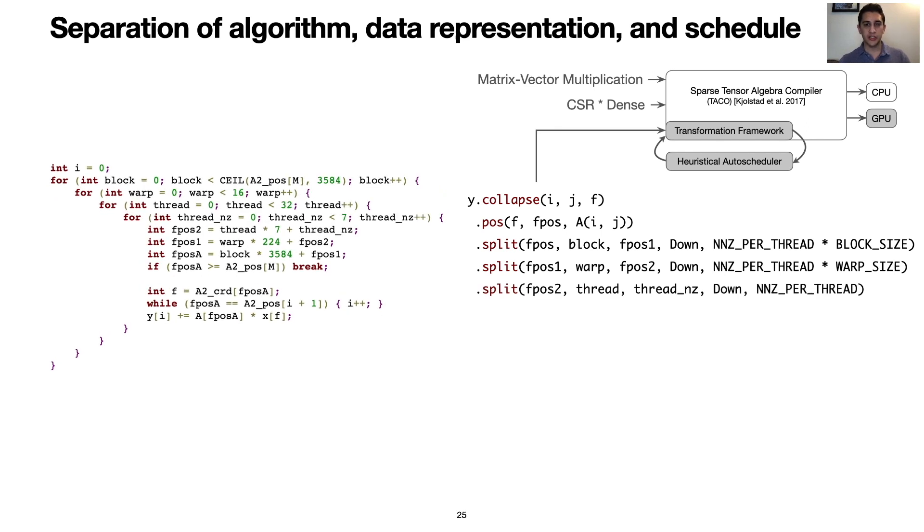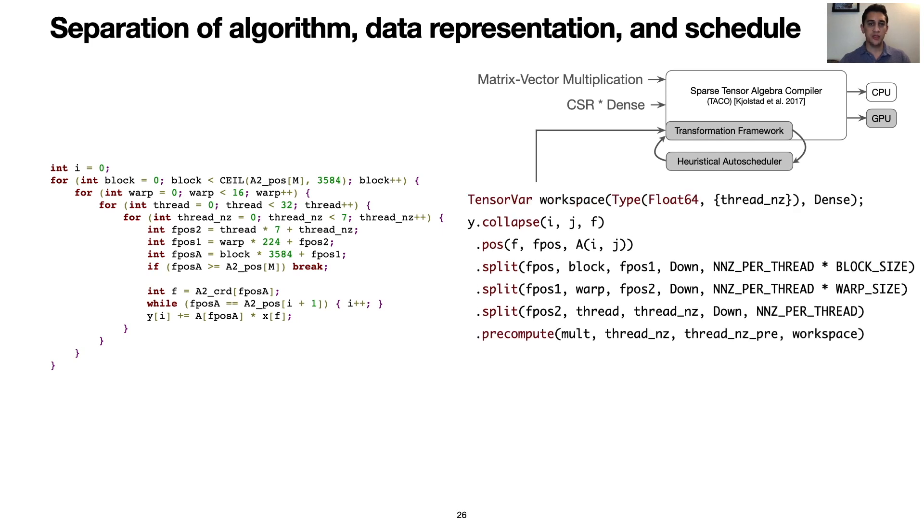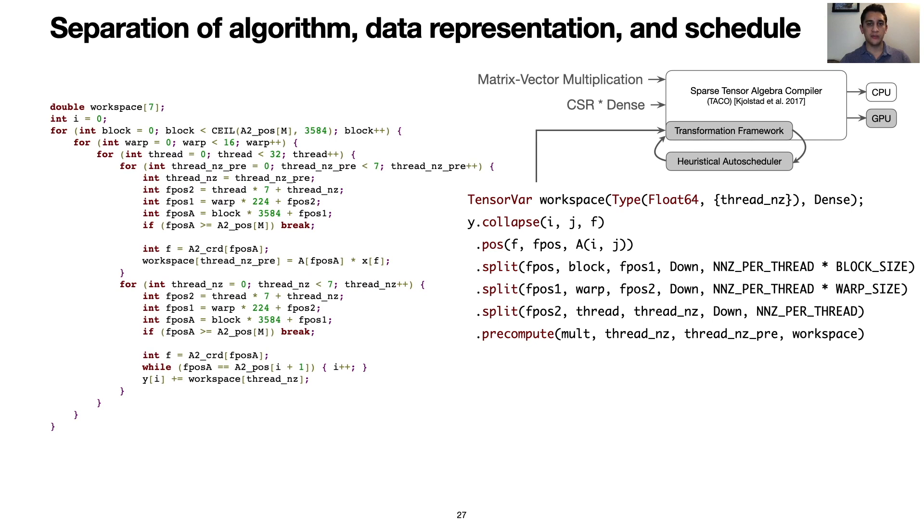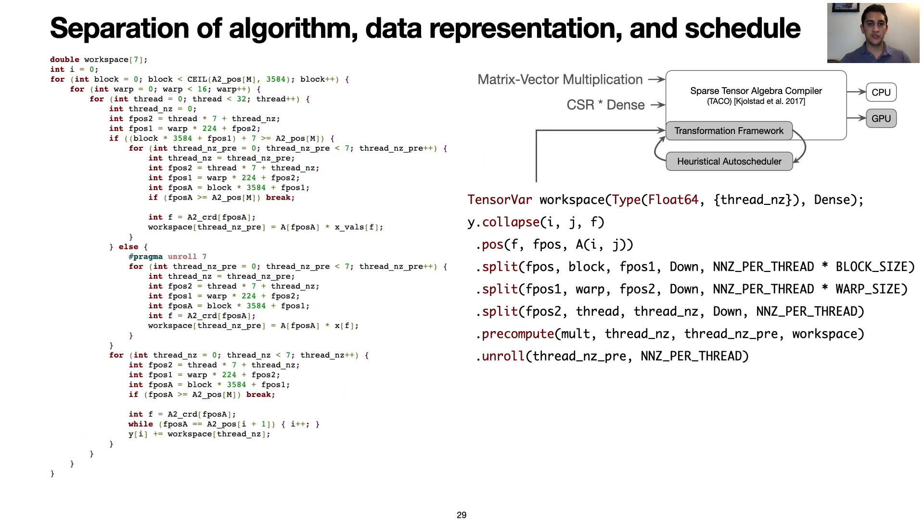In this optimization strategy, each thread is given 7 consecutive non-zeros to multiply with the corresponding element of the dense vector. We can also optimize for GPU memory bandwidth with the pre-compute transformation. This results in reading all of the inputs and pre-computing the multiplication. In a separate loop, we can accumulate the temporary array into the output. We can also unroll the pre-computation loop. This transformation exposes additional instruction-level parallelism. The pre-compute and unroll optimizations together provide a 36% speedup for the GPU schedule.